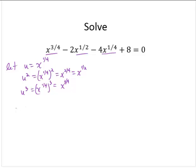So then this becomes u cubed minus 2u squared minus 4u plus 8 is 0. And I can now try to factor this polynomial. And in fact, it does factor, using grouping.